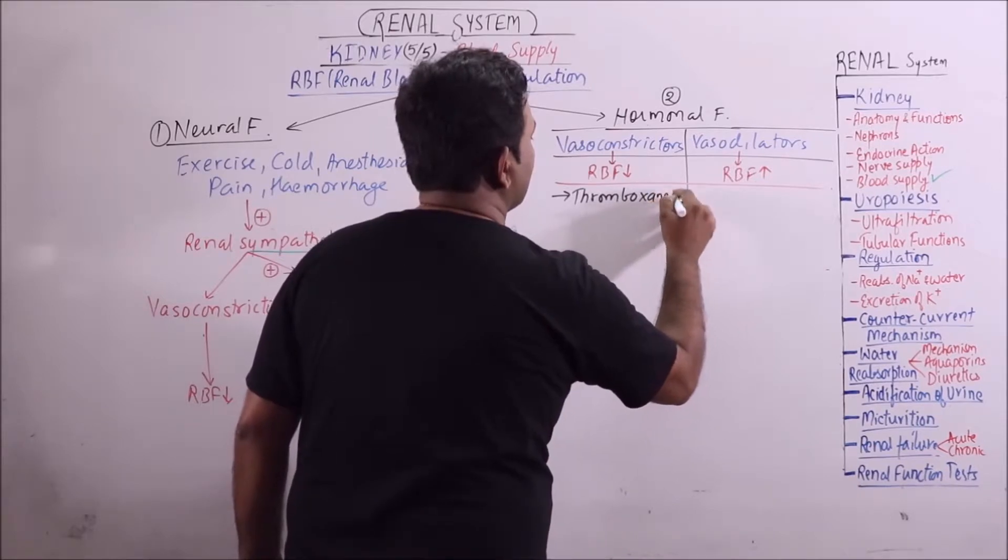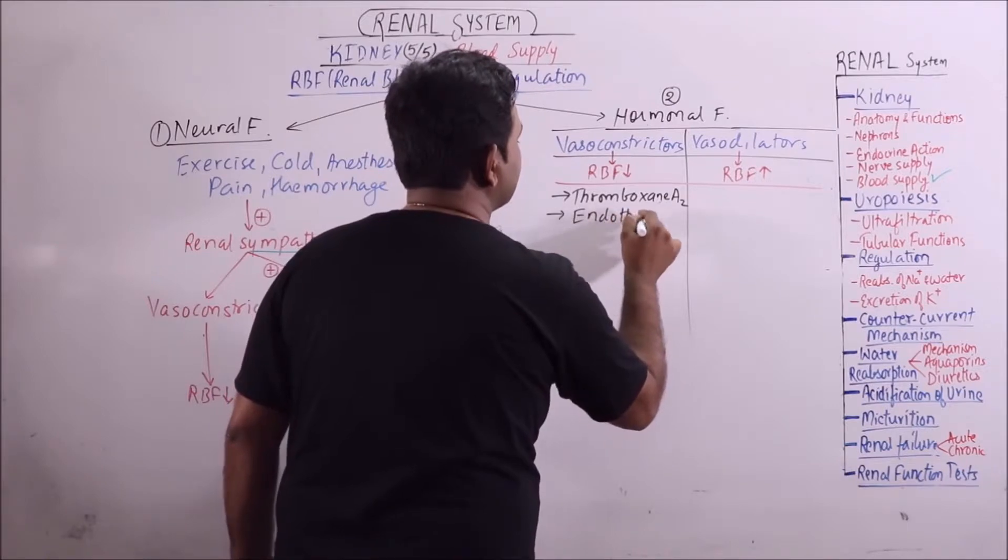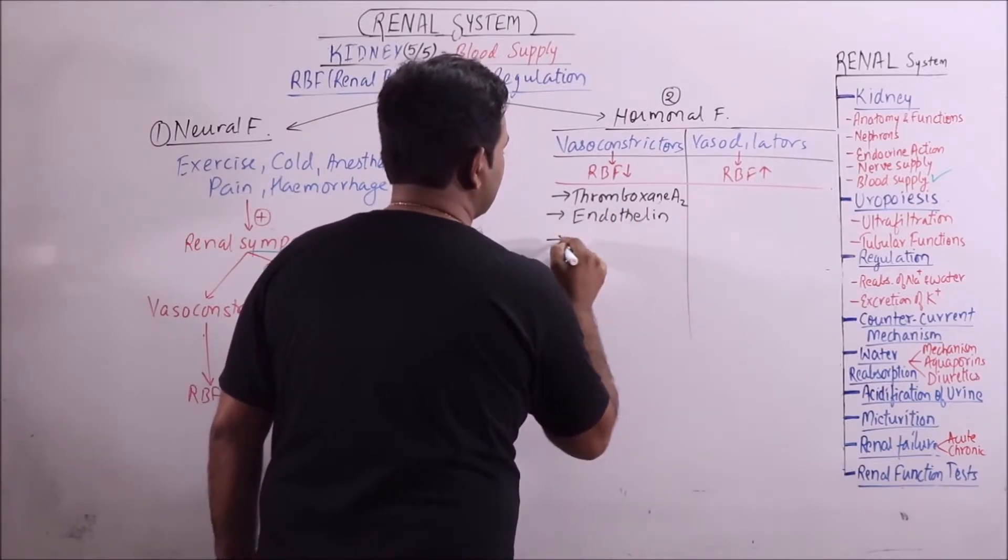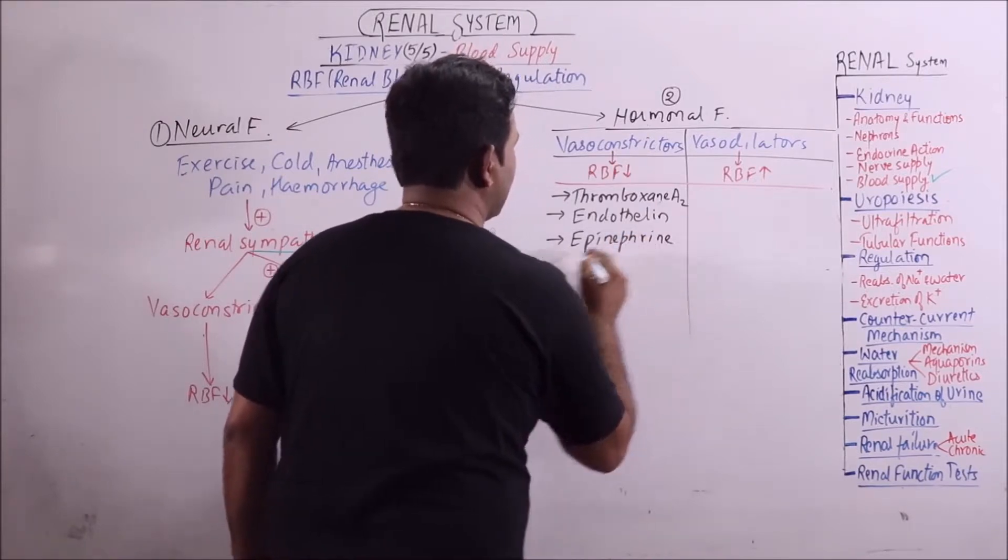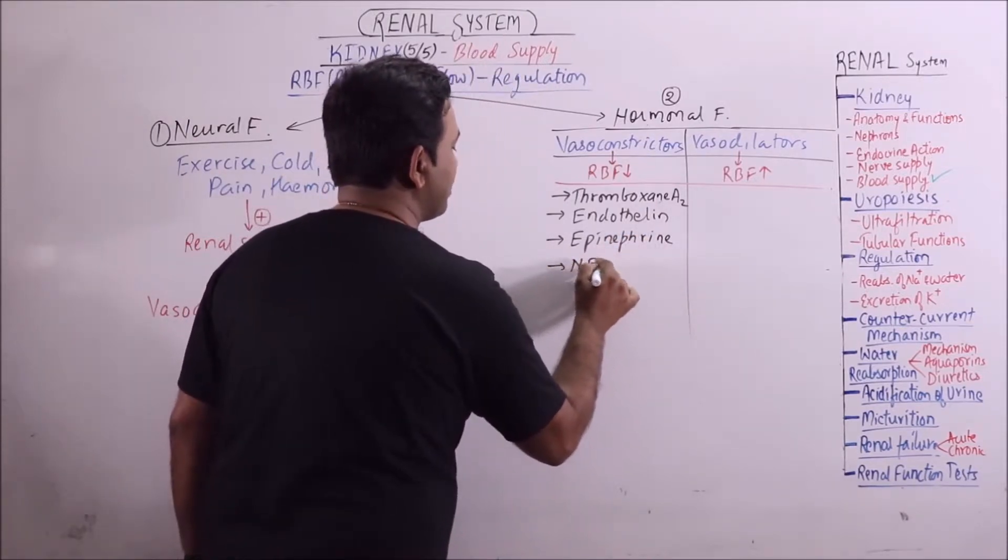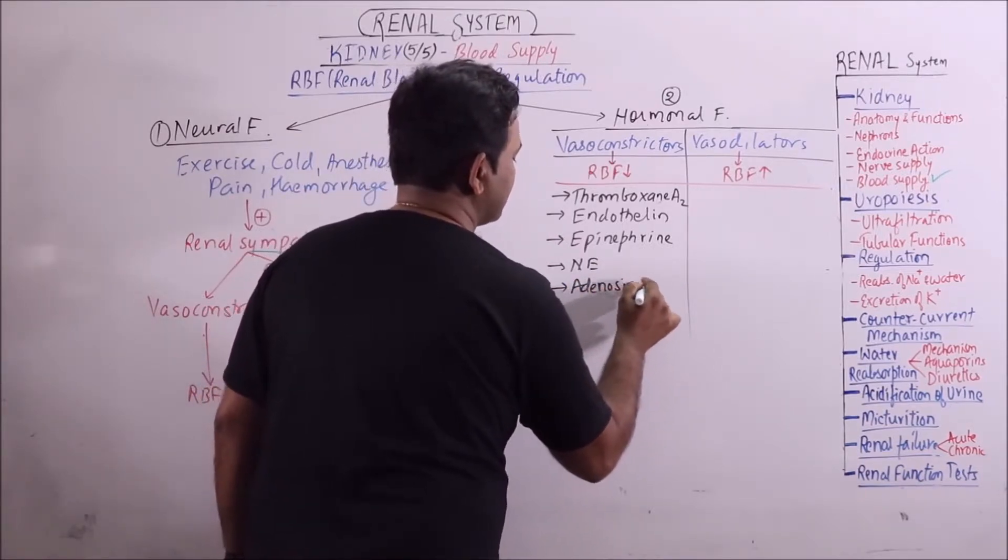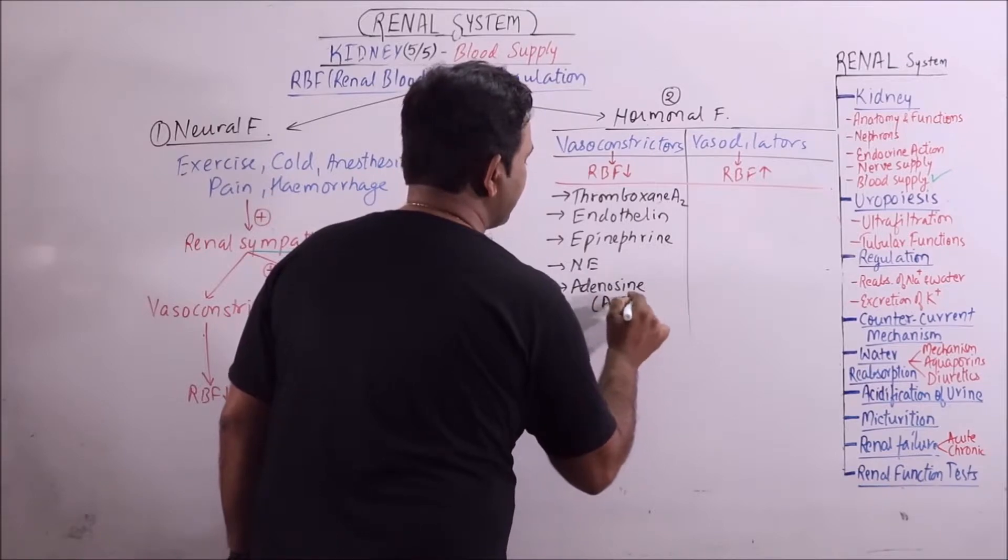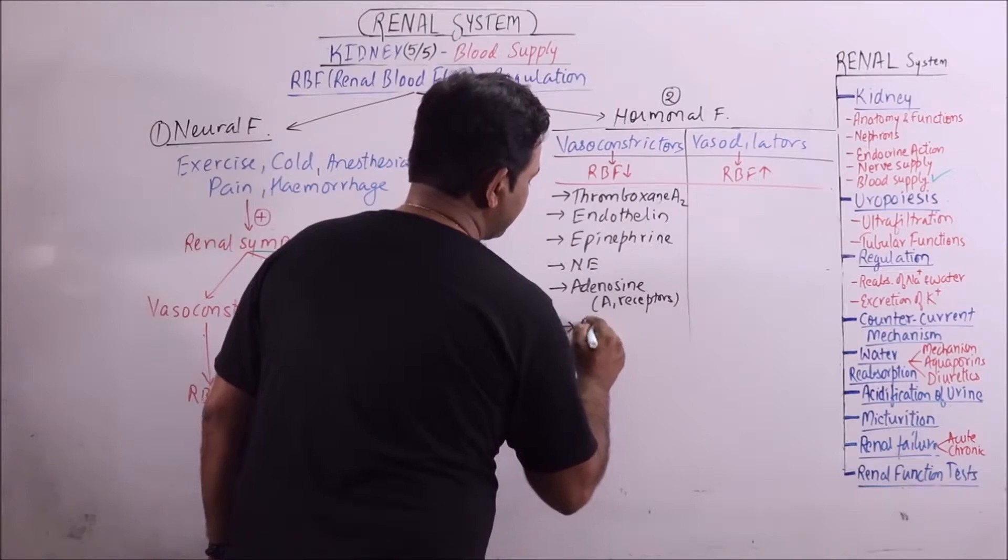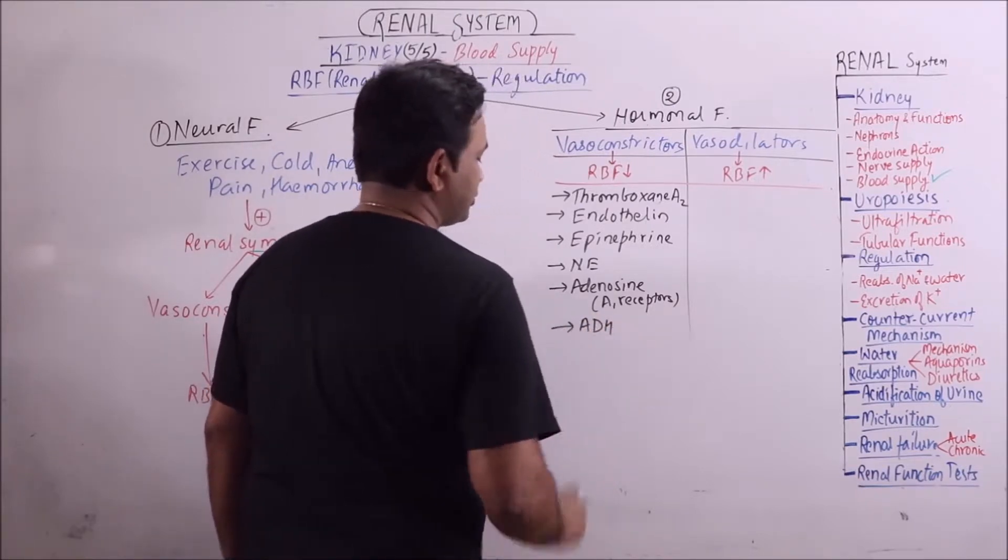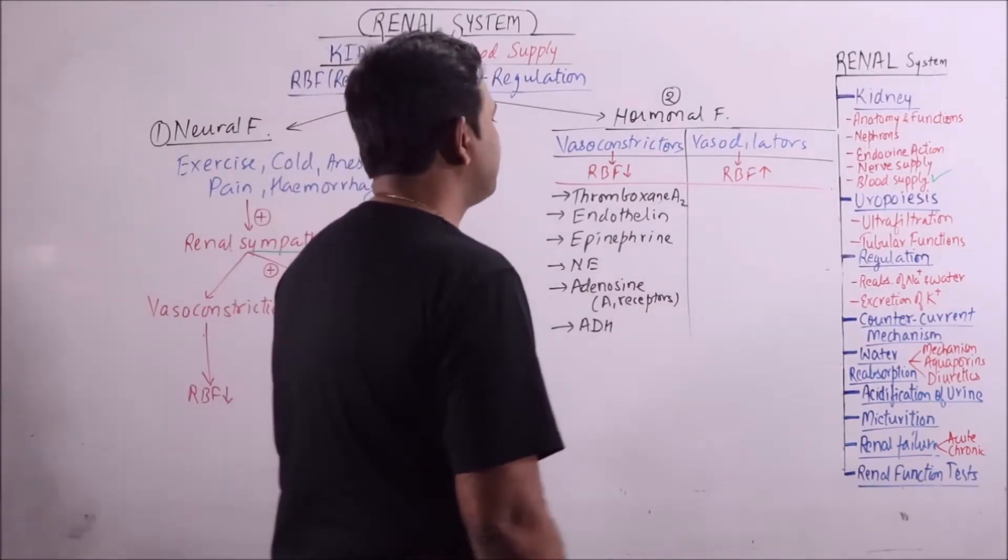Thromboxane A2, then endothelin, epinephrine, then norepinephrine, then adenosine A1 receptors, then ADH.